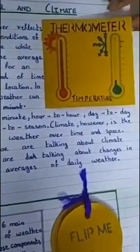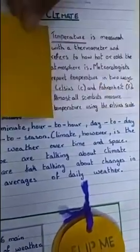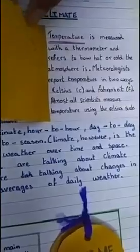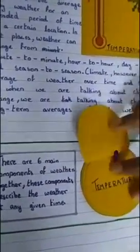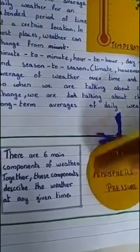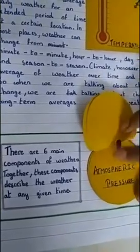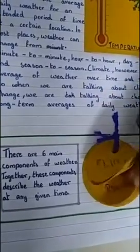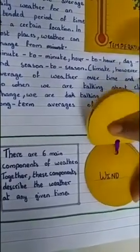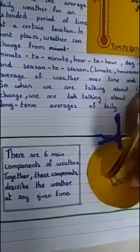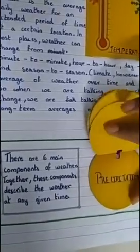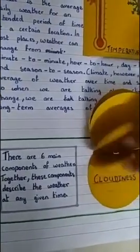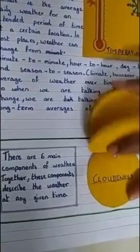This is my thermometer about temperature, and I have temperature notes. And then I have covered temperature, atmospheric pressure, wind, humidity, precipitation, and cloudiness.